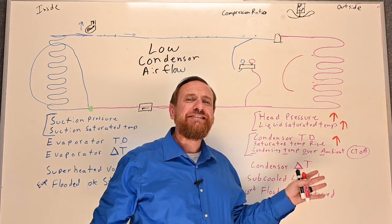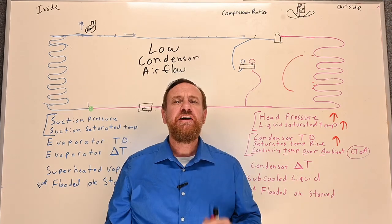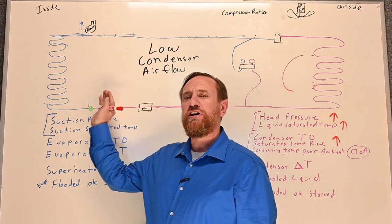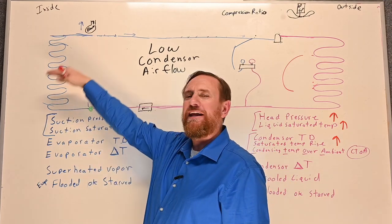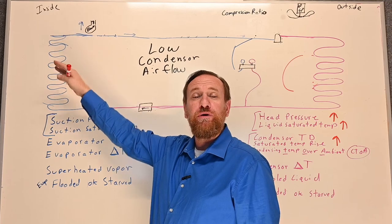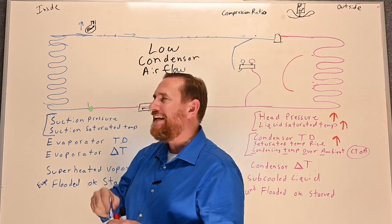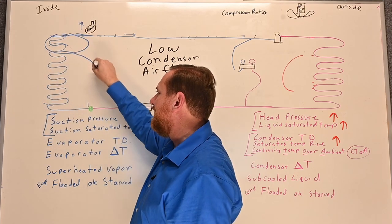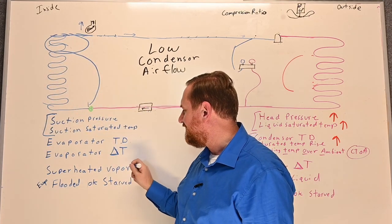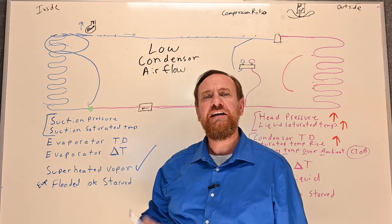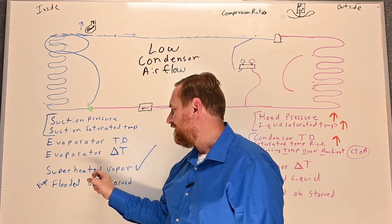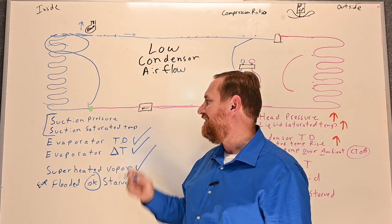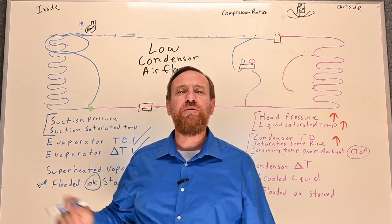What happens next really depends on our metering device. First, let's look at a thermostatic expansion valve (TXV). The TXV's job is to maintain the right amount of superheat in the evaporator coil. It's going to keep the right amount of superheated vapor, which means it keeps the same amount of saturated refrigerant. The superheated vapor with the TXV should be spot on, which means the evaporator coil is going to be okay — you'll still have a good delta T and a good TD.